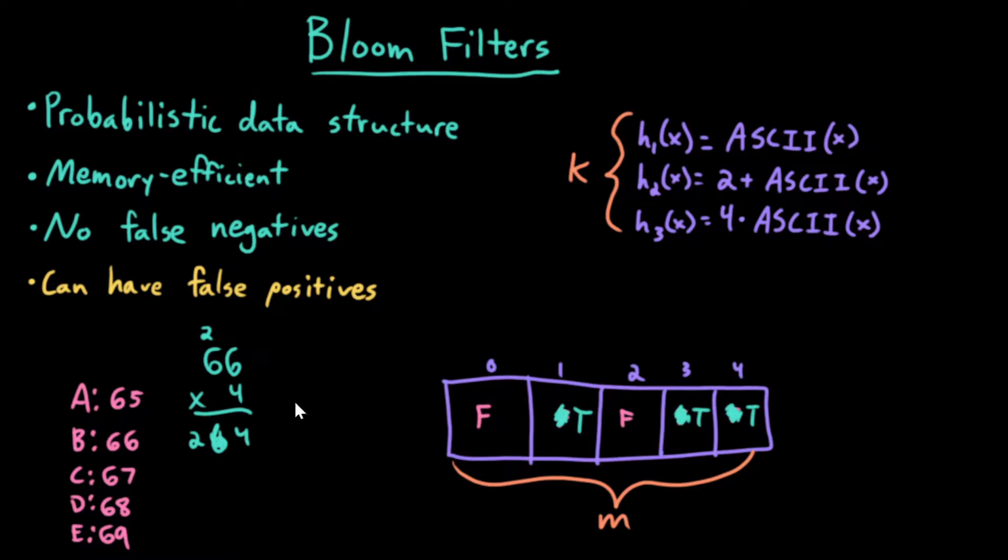What would happen if I looked for the character l? So l, the ASCII value of l is 76. So let's see, 76 mod 5 is 1. Oh, that's true. Okay. 76 plus 2 is 78, mod 5 is 3. Huh, that's also true.